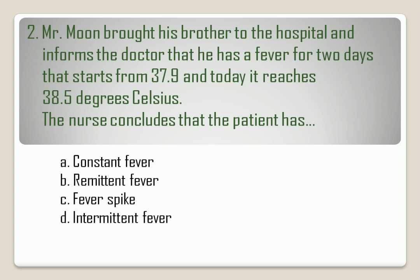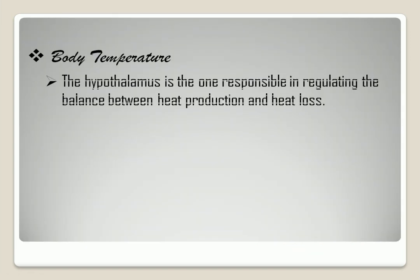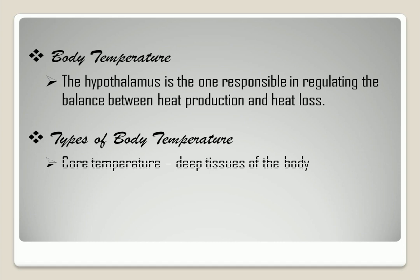Question No. 2. The correct answer is letter A, constant fever. Question No. 3 — Body Temperature. The hypothalamus is the one responsible for regulating the balance between heat production and heat loss. Types of Body Temperature: Core Temperature — it is the temperature of the deep tissues of the body. Therefore, it is more accurate.